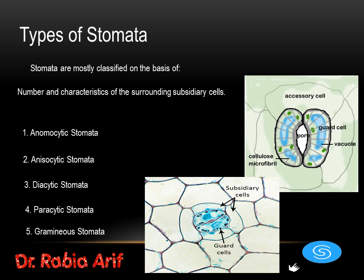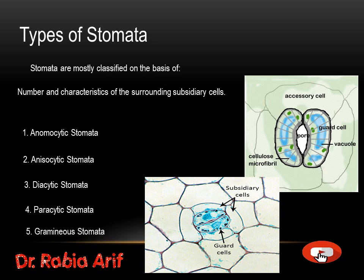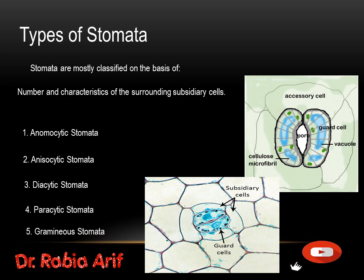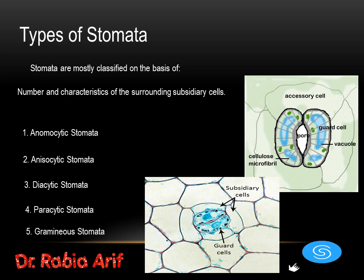The types are: number one, anomocytic stomata; anisocytic stomata; diacytic stomata; paracytic stomata; and the last one is graminaceous stomata. In the diagram you can clearly see the subsidiary cells and the guard cells. Guard cells are those cells that protect the stomatal aperture and surround the stomata.